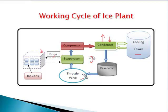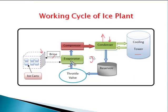In the throttle valve, expansion takes place from high pressure to low pressure. After expansion, we get the primary refrigerant — ammonia — at low pressure and low temperature, which then enters into the evaporator. So we can see that the primary refrigerant flow takes place through these components.